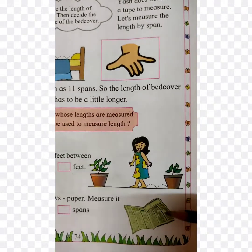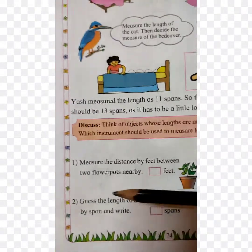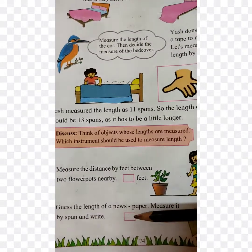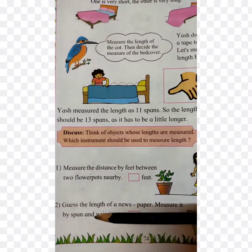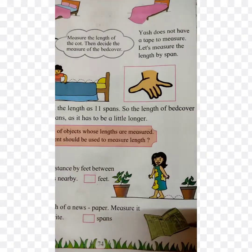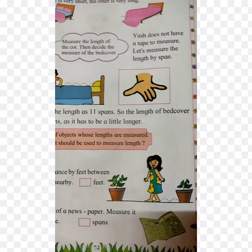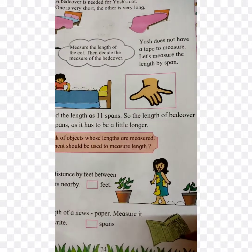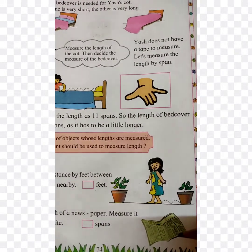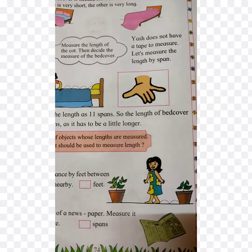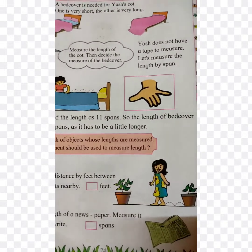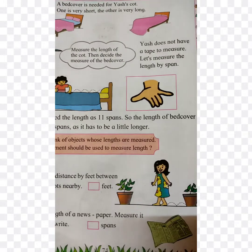Next, student — see, this is a newspaper and you have to guess the length of a newspaper, measure it by span and write. Bachon, aapko bola gaya hai ki yeh jo newspaper hai, iski jo lambai hai, aapko apne span se maapna hai — yaani haath ke hateliyon se maapna hai ki yeh kitne span hai?